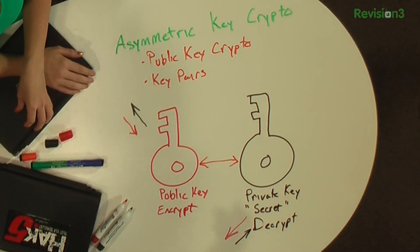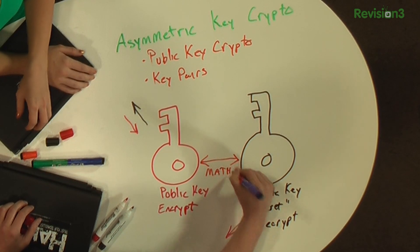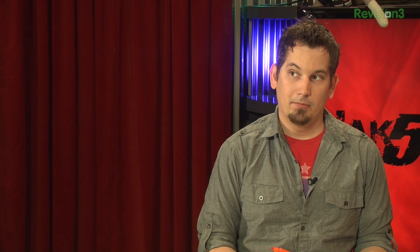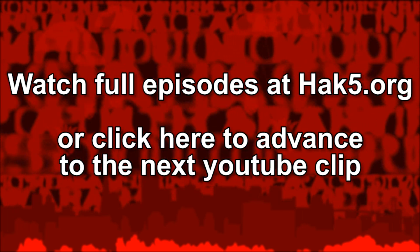The way this works is because these two keys have a relationship based on math. The whole premise is that it is computationally hard to figure out the private key based on the public key, so you can pretty much tell anybody your public key. Now, it is theoretically possible to figure it out — if you're the NSA with giant warehouses of supercomputers, or maybe they're building them in Utah — but for all practical purposes, we'll be right back.